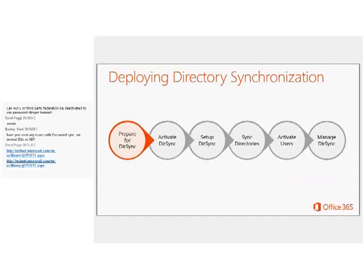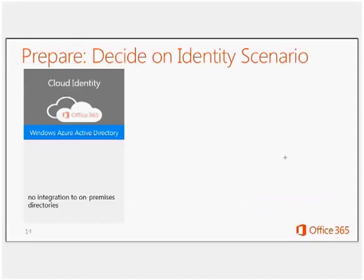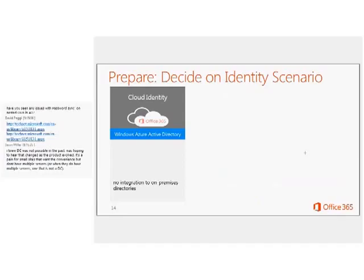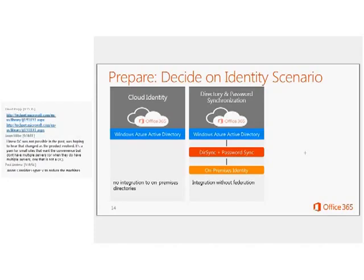Moving to the preparation tasks: one of the main things to do is decide whether password sync is the right solution for the organization. Let's do a quick review of the identity options available for cloud services. Option one is a cloud identity with no integration to the on-premises Active Directory — usually used by small businesses that don't even have Active Directory in place, creating users and groups directly in the cloud. Option two is to implement directory sync, and now the option to enable password sync with directory sync. Option three is ADFS single sign-on.